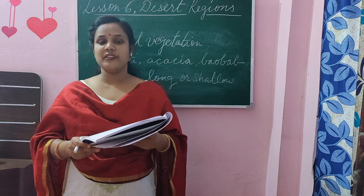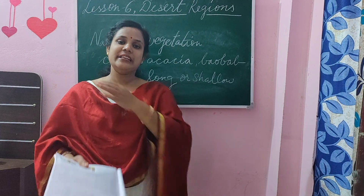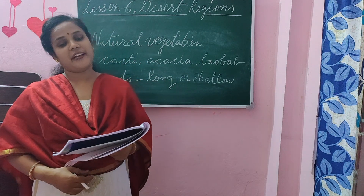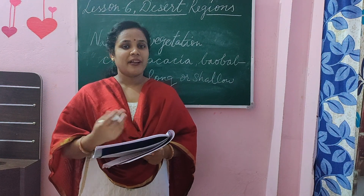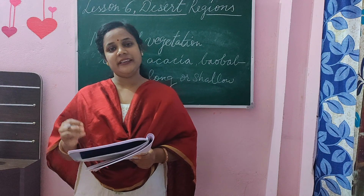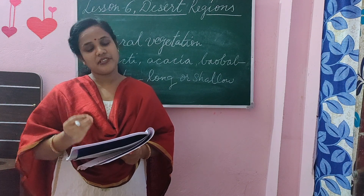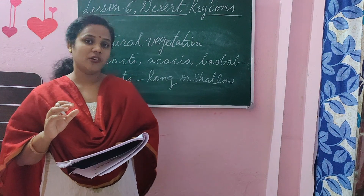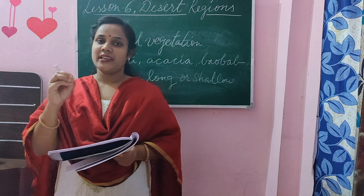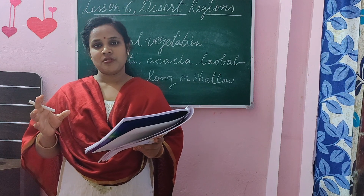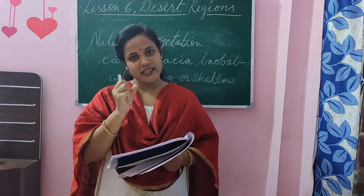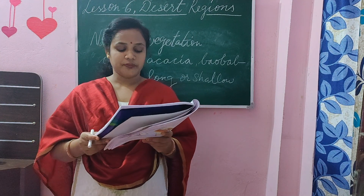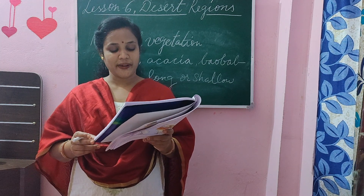Desert plants usually have small leaves. Some plants drop their leaves during the dry period, just like plants here shed their leaves in autumn — in the same way, desert plants shed their leaves in the dry season. Some plants are succulent, storing water in their leaves, stems, and roots. Cacti, acacia, and small shrubs are the main plants that grow in desert regions.